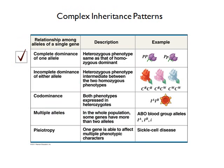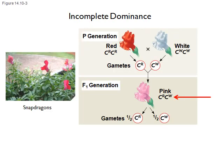We've worked through complete dominance and will now talk about more complex inheritance patterns. The first one is incomplete dominance. What I want you to notice is the heterozygous phenotype — it is intermediate between the two homozygous phenotypes. The example always used for incomplete dominance involves snapdragons, which can produce red flowers, white flowers, or pink flowers.